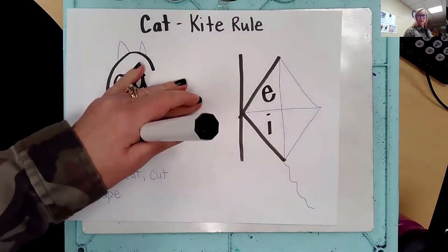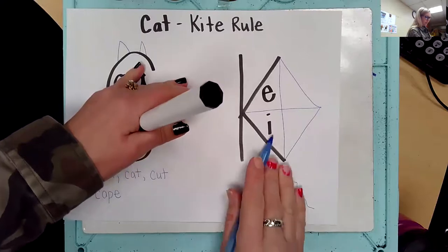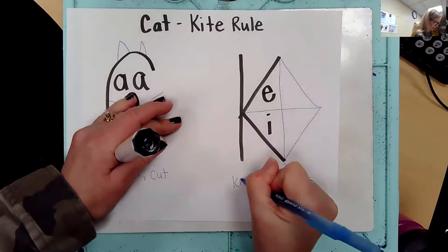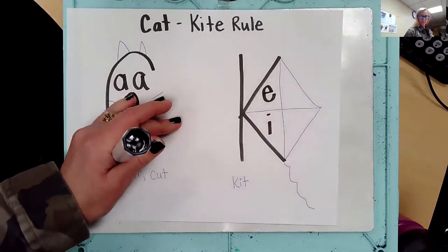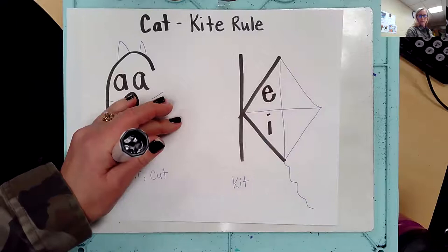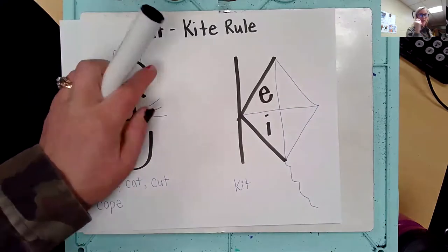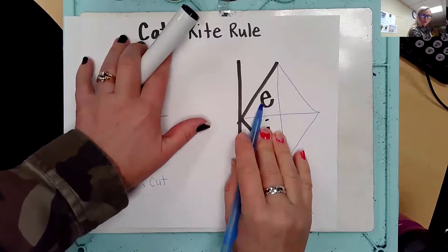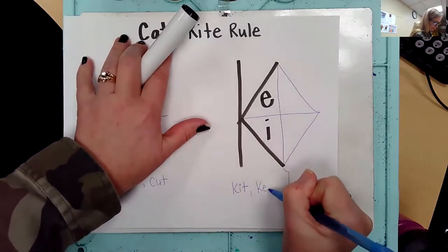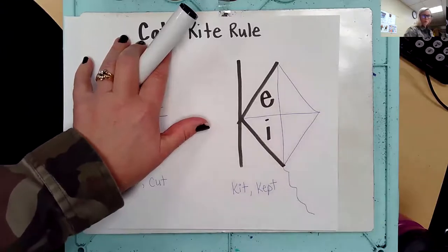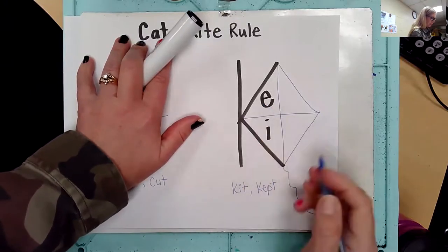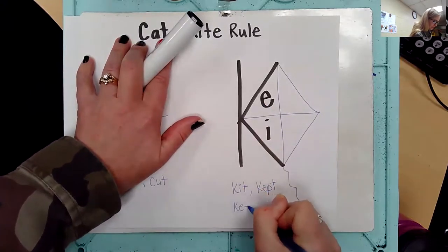Like in the word 'kit' — K-I-T. I hear an I, that means I'm going to use a K. How about 'kept' — K-E-P-T? 'I kept my promise.' I hear the E sound, that means I'm going to use a K. Or the word 'keep' — K-E-E-P. I hear an E, that means I'm going to use the letter K.